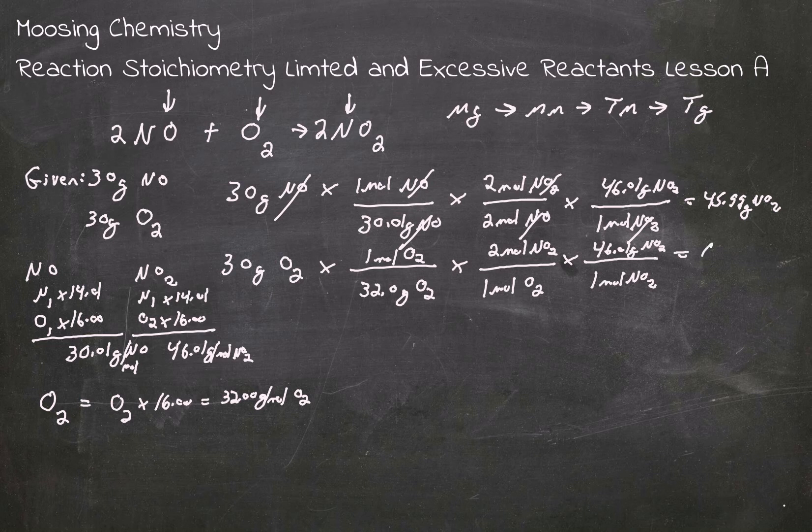That made 86.27 grams of NO2. So which one is the least amount? The NO2 – this NO2 is the least amount here. So that means that our limiting reactant is our NO. So NO is the limiting reactant. Okay.